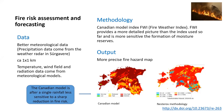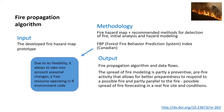In this case, it is probably more adequate. The second prototype in the fire theme was the fire propagation algorithm, which used as input the developed fire hazard map. Recommended methods for detection of fire, initial analysis, and hazard modeling were developed. The Canadian FPP forest fire behavior prediction system index was used due to its flexibility — it allows taking into account seasonal changes, and also the code is free. The output of this prototype is a fire propagation algorithm and data flows. You can read more about this prototype from the almost 100-page-long report, with the link at the bottom.